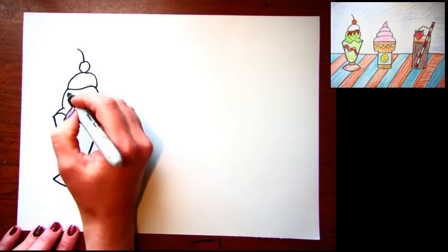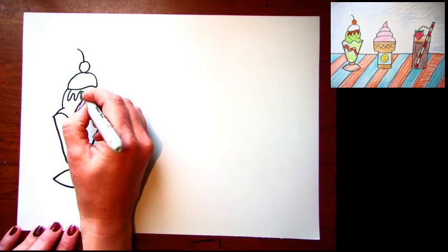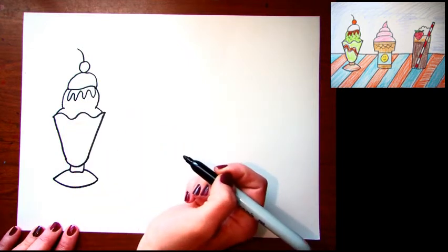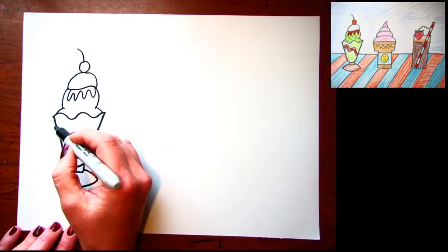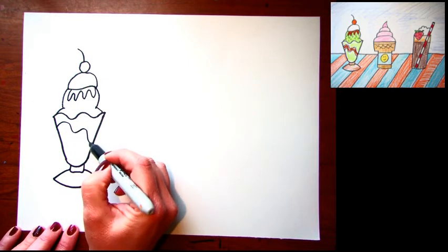Now I'll add a few details to make it look even more delicious. Maybe some hot fudge, wavy lines here coming off my ice cream. And then I'll make another little hot fudge because I like to have a lot of it right at the bottom of my cup.